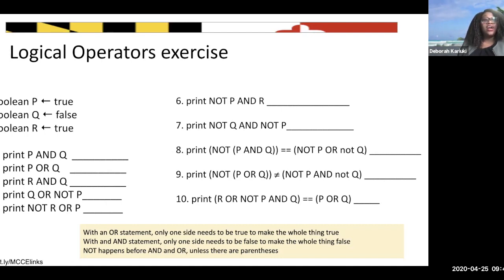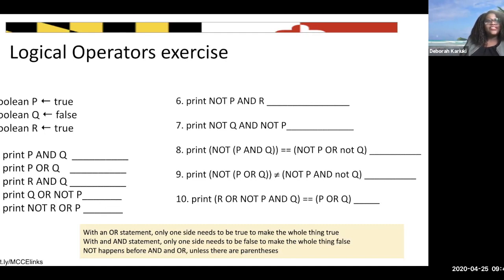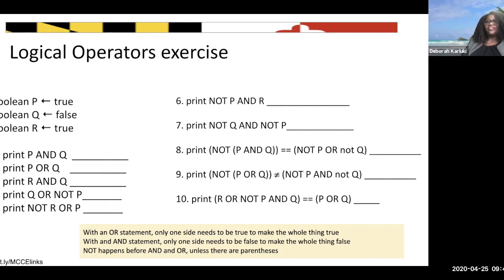R AND Q: R is true and Q is false, so the answer is false. Then Q OR (NOT P): we are negating P - it was true but now we make it false. So we have false OR false, which is false. And (NOT R) OR P: R becomes false, and P is true. So false OR true gives us true.